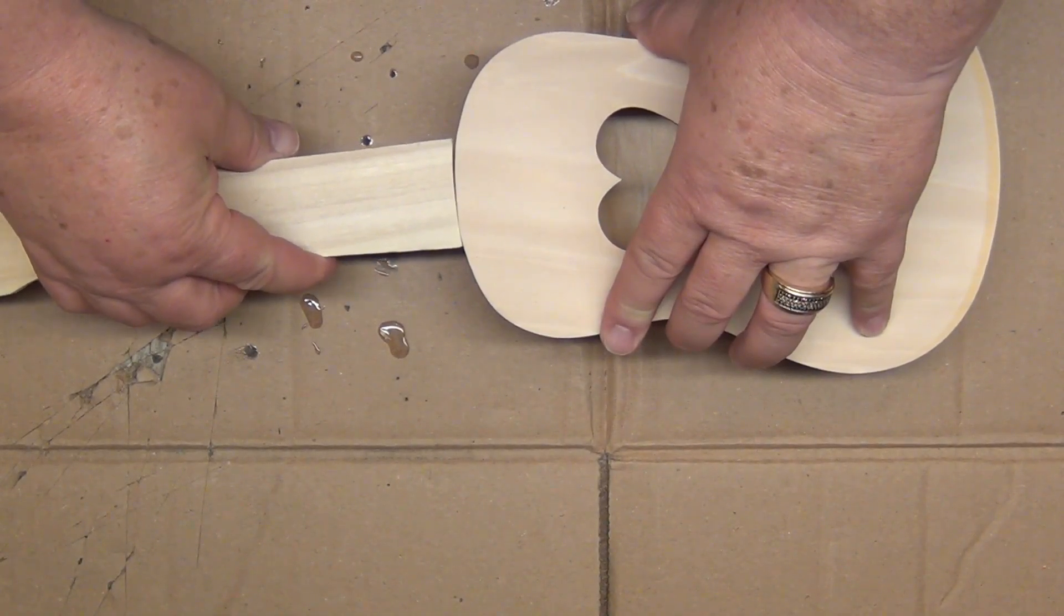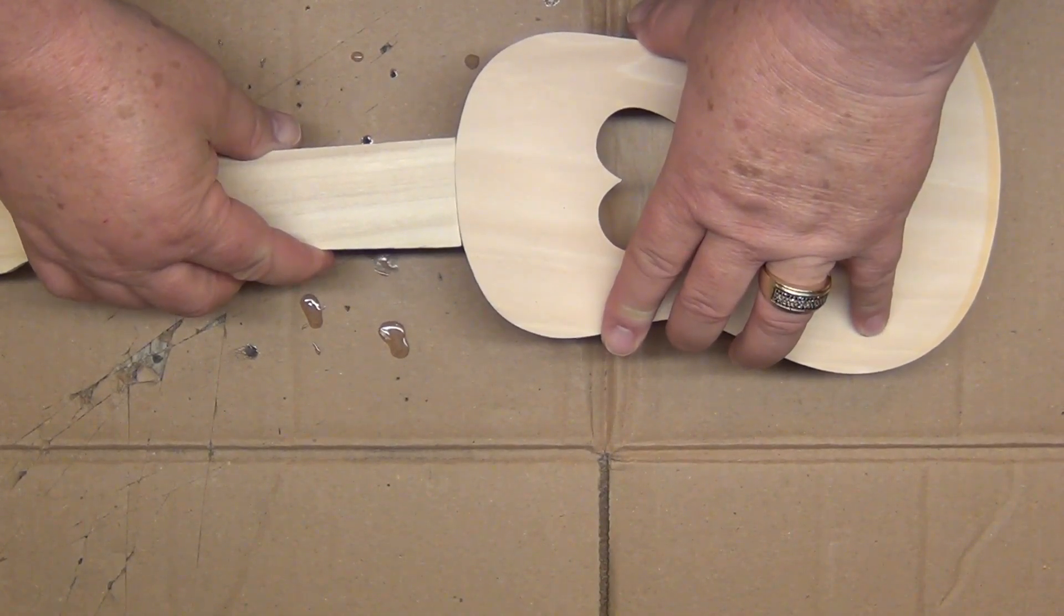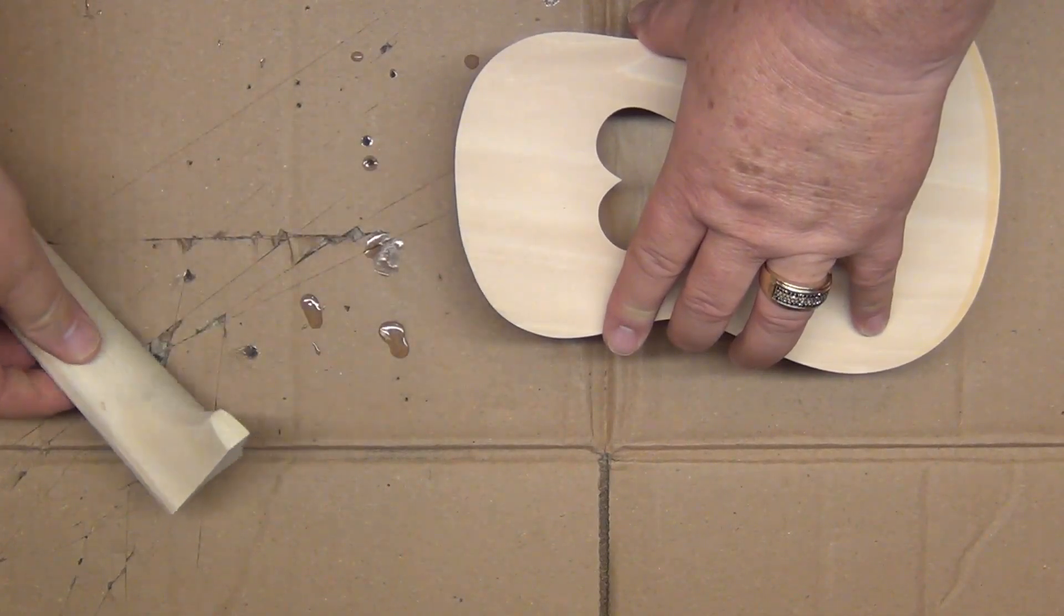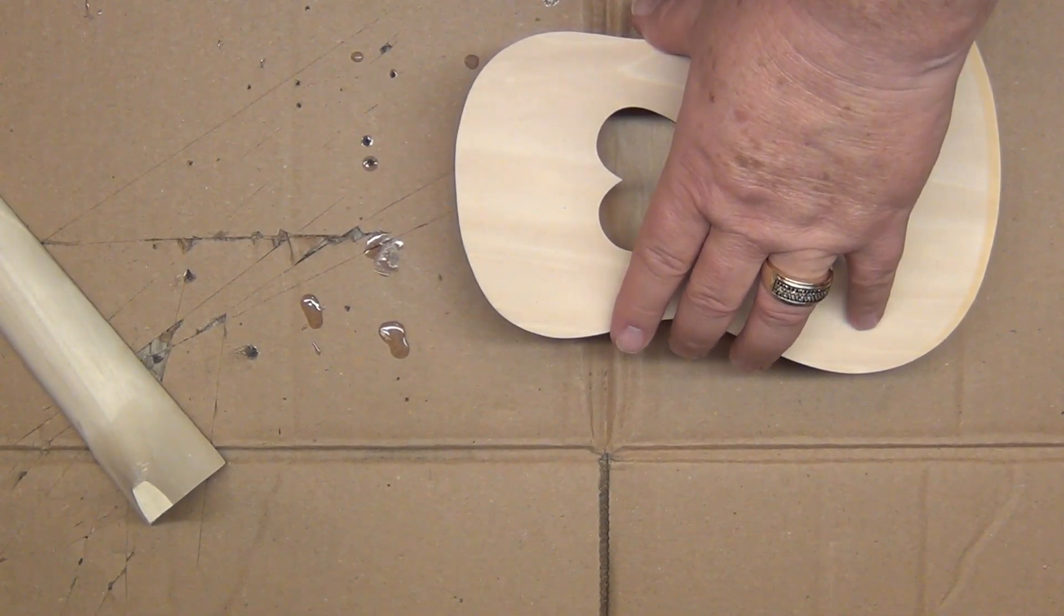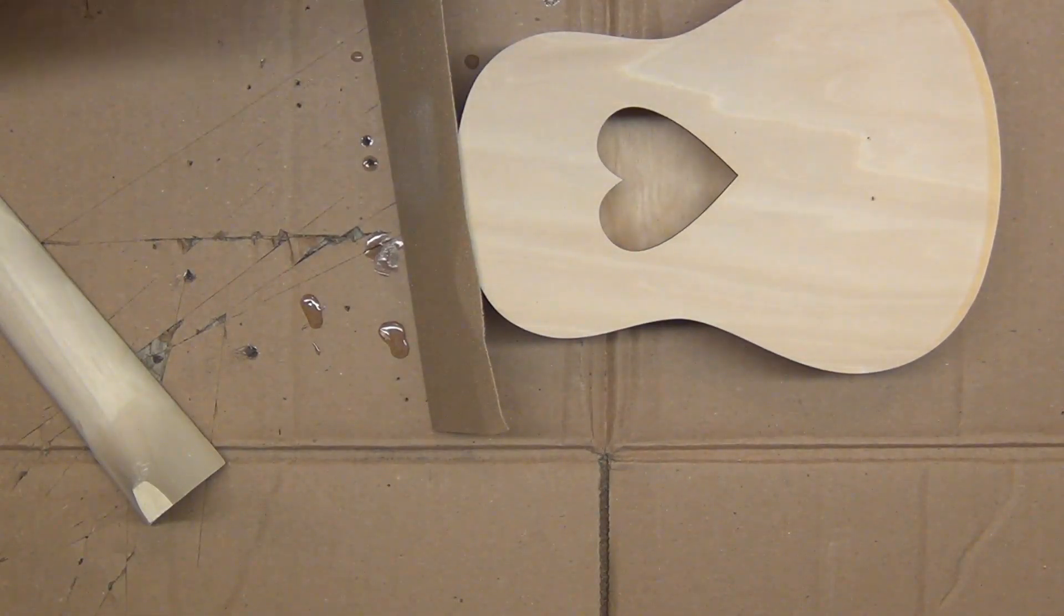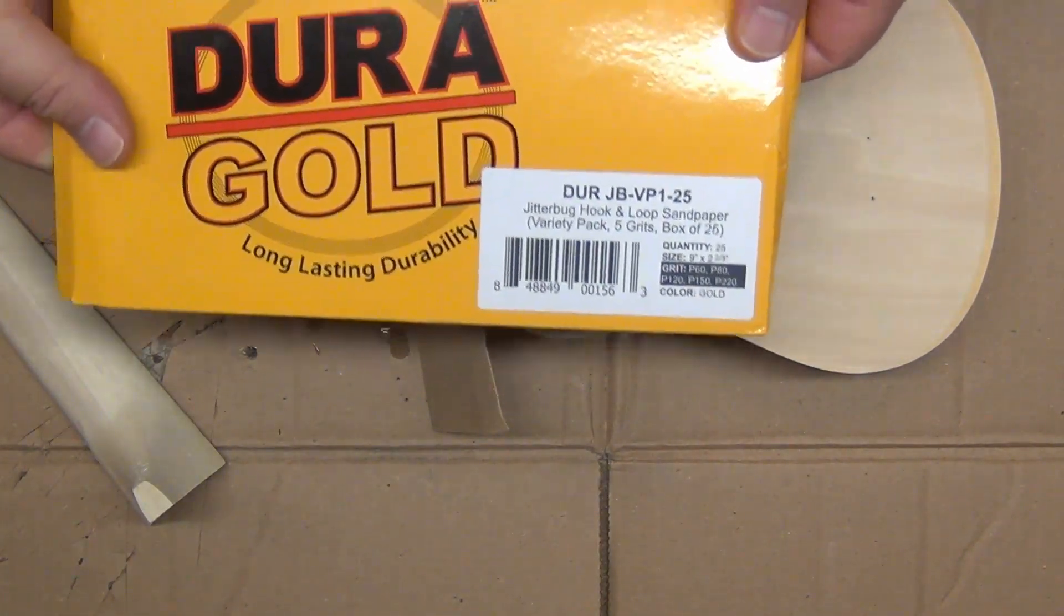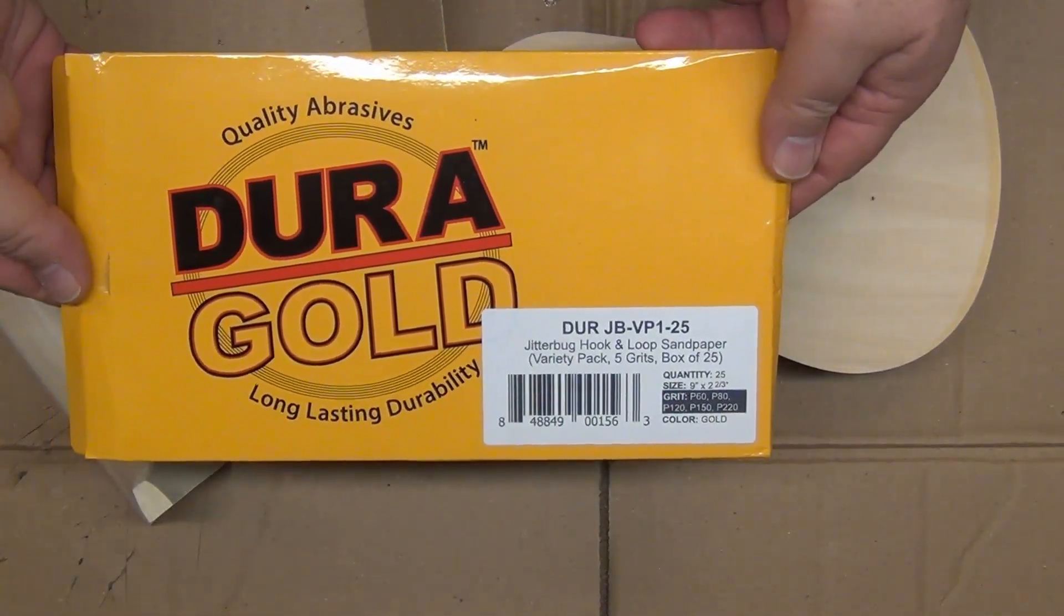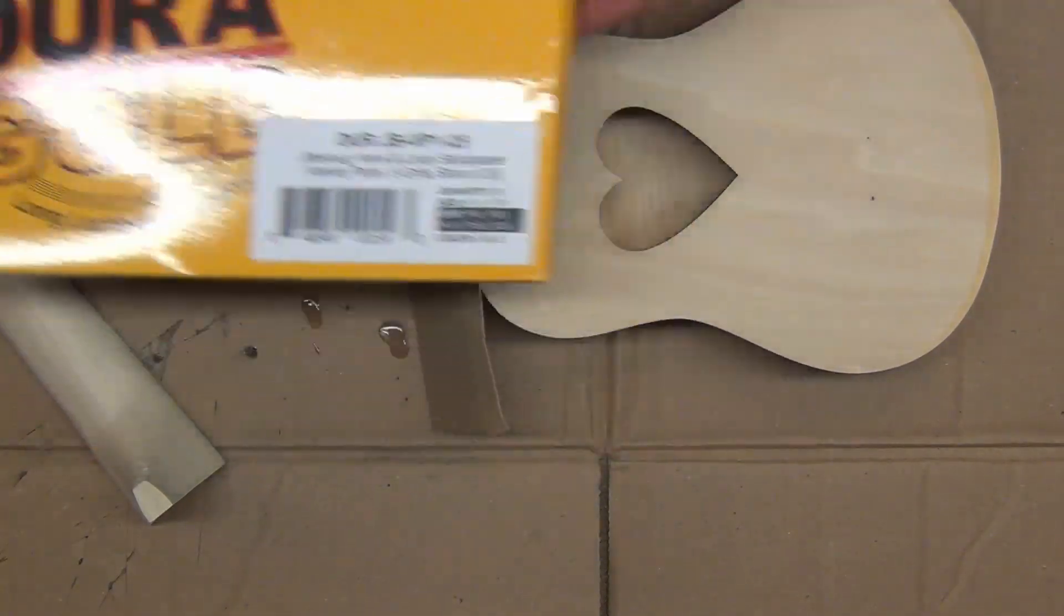So I noticed that the neck didn't fit really well, so I decided to use some sandpaper and fit it around the body, the shape of the body, and then I will try to make the neck fit just a little bit better.